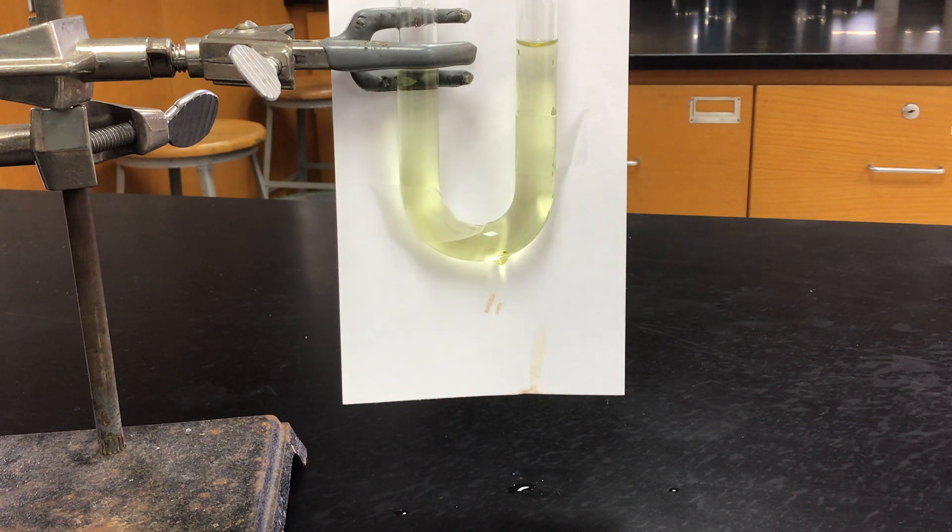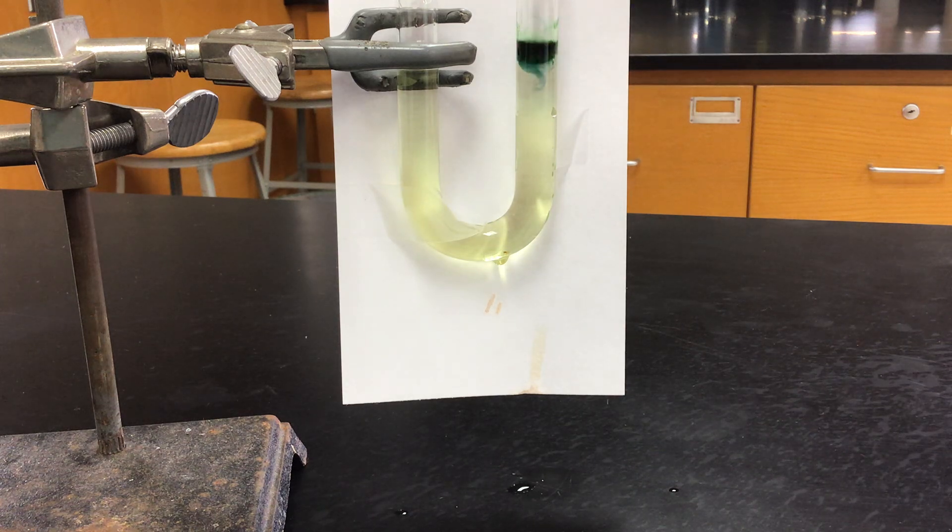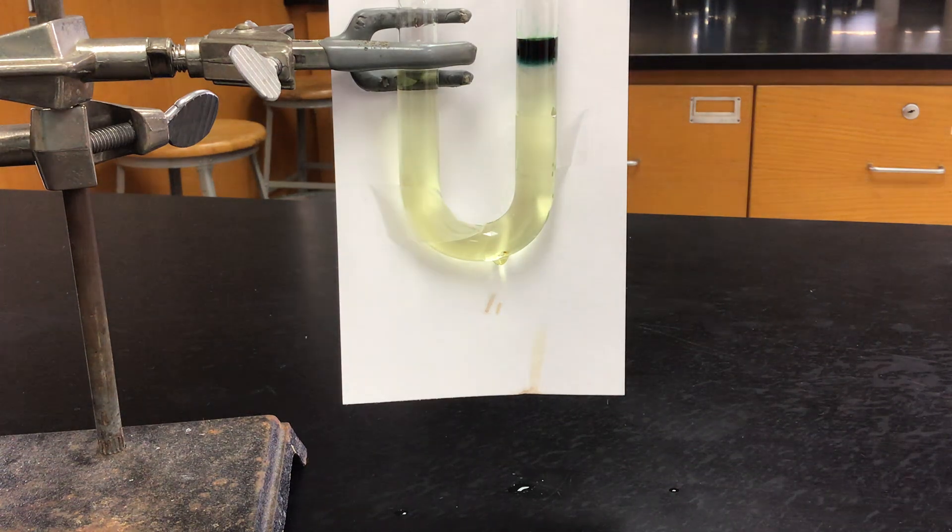So that means that the right-hand side should be forming hydroxide, and it should be basic. So what that tells me is that this should turn blue if it's basic. It definitely looks like it's turning blue to me.